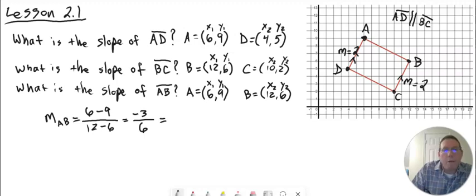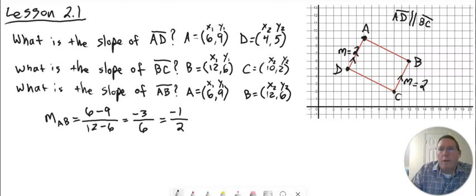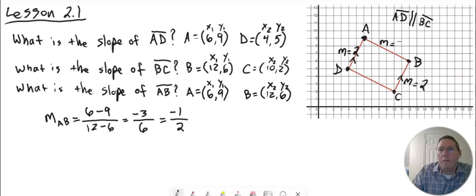Now step 3: 6 minus 9 is negative 3, and 12 minus 6 is 6. Step 4, reduce the fraction: 3 and 6 are both divisible by 3. Negative 3 divided by 3 is negative 1, and 6 divided by 3 is 2. So now we've reduced it, and our slope is negative 1 half. You can see that this line is downward sloping, so it has a negative slope. M equals negative 1 half.